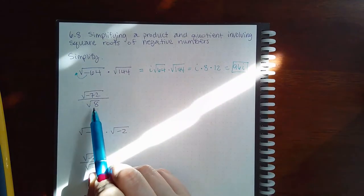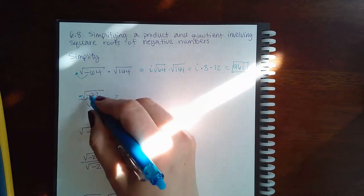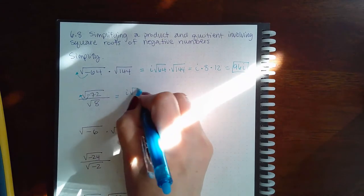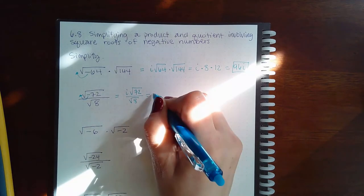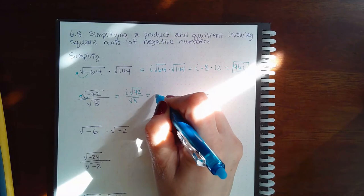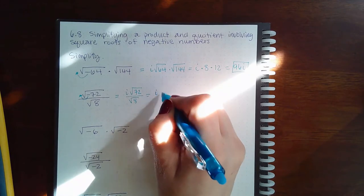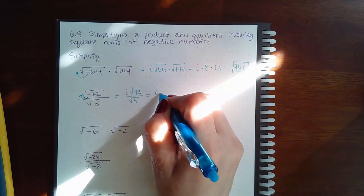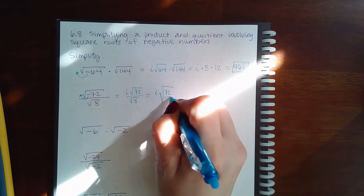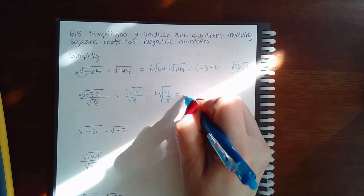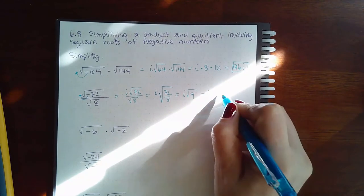For the next example, same thing — we take the negative out and it becomes an i. I get this expression and this expression, and I can put these two together to get i times √72 over 8, which simplifies to i times √9, which is i times 3, or 3i.